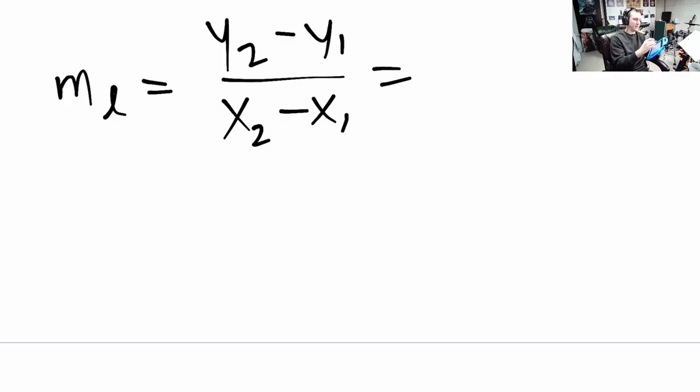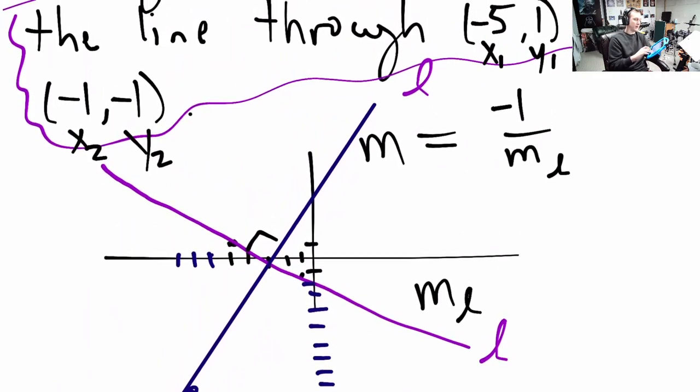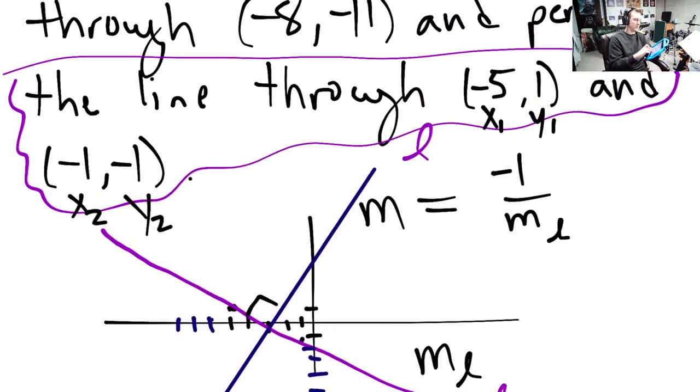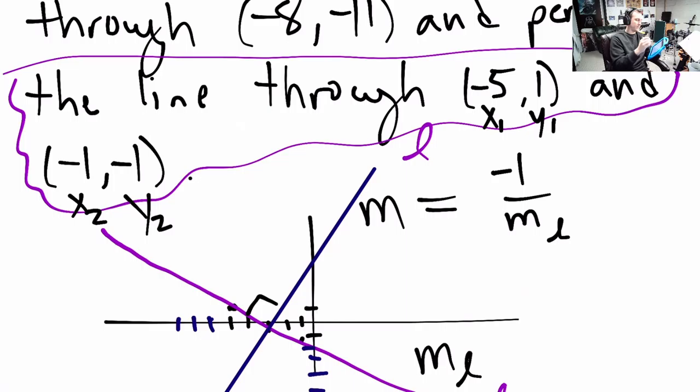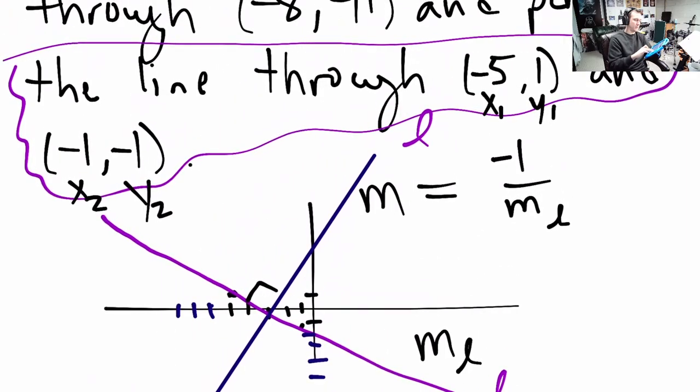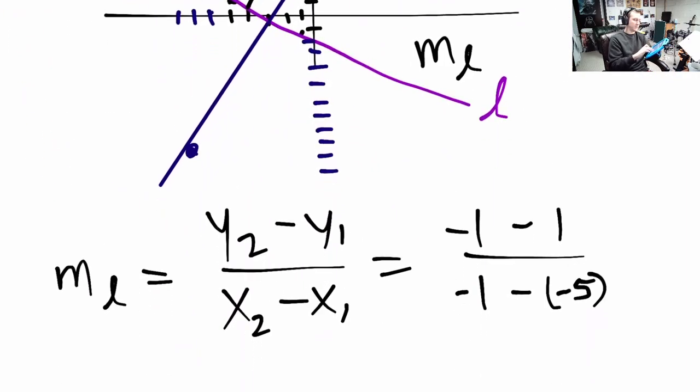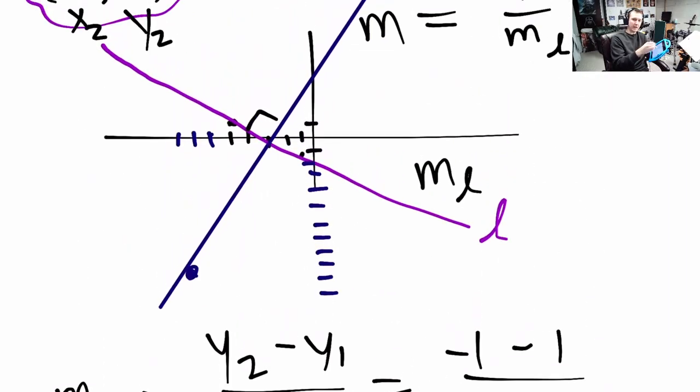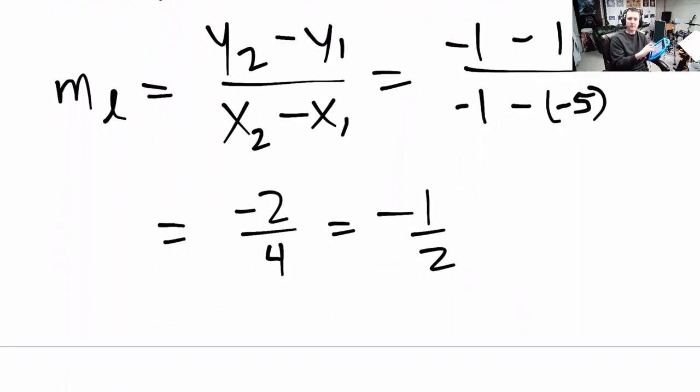From our points above we had y2 was negative 1 and y1 was 1. So, negative 1 minus 1 divided by x2, minus x1 which were negative 1 and negative 5. So, negative 1 minus a negative 5. Okay, so let me just confirm negative 1, negative 1 minus 1. Alright, so we've got it. So we'll just simplify this, the top is negative 2, the bottom is negative 1 plus 5 which is positive 4. So, this line has a negative slope 1 half which looks about right. It's definitely negative sloping down to the right and it's not very steep. It's kind of a shallow slope. So, negative 1 half fits the bill.